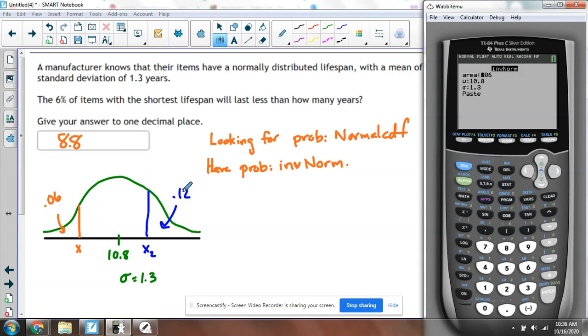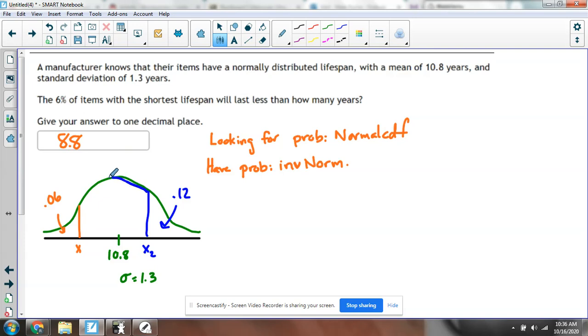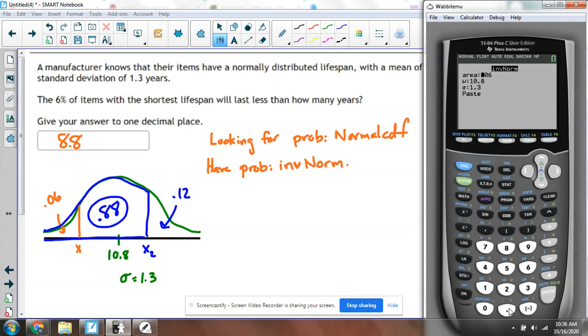So if 12% is above this thing, that means, this is going to be messy probably, like that. That means 88% is below. So I'm not going to use 0.12, I'm going to use 0.88.